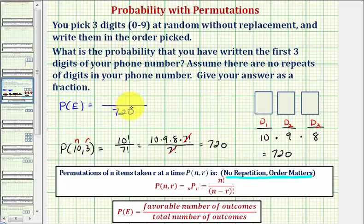And now for the numerator, we want to determine the favorable number of outcomes, which means how many of these permutations of these three digits would match your phone number, and only one of them would match. So the probability of this event is one divided by 720, which is what our homework is asking for.